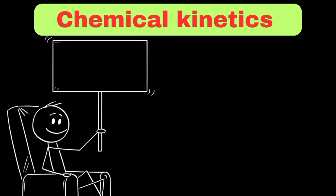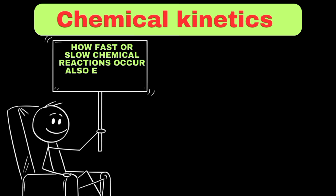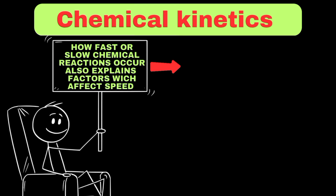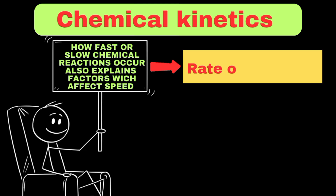Chemical kinetics is the branch of chemistry that studies how fast or slow a chemical reaction will happen, and also explains what factors can affect the speed of the reaction. To understand it deeply, first we need to learn what is meant by the rate of reaction.